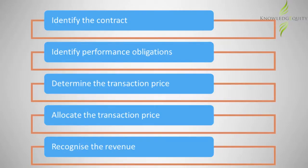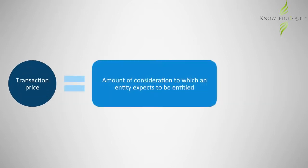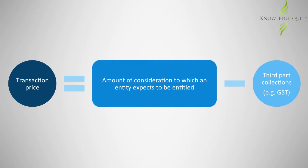Step three of the five-step model requires us to determine the transaction price. The general principle is that the transaction price is the amount of consideration to which an entity expects to be entitled in exchange for transferring promised goods and services to a customer, excluding amounts collected on behalf of third parties, for example GST.